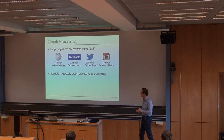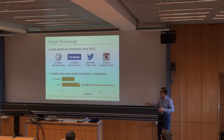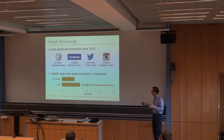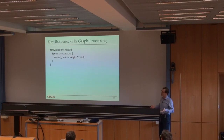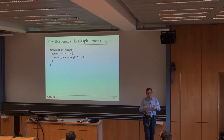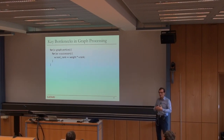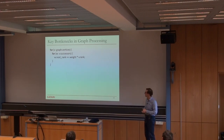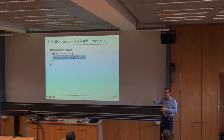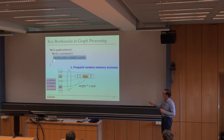Many graph processing problems are bottlenecked by memory, especially when the graph becomes large. One example computation is at the core of PageRank, which started Google's web search system. Basically, you look at your neighbors and determine your rank based on the ranks of your neighbors. What happens during this computation is frequent random memory accesses because your neighbors are not necessarily in the same address vicinity, and there's very little computation — just a multiplication and addition.